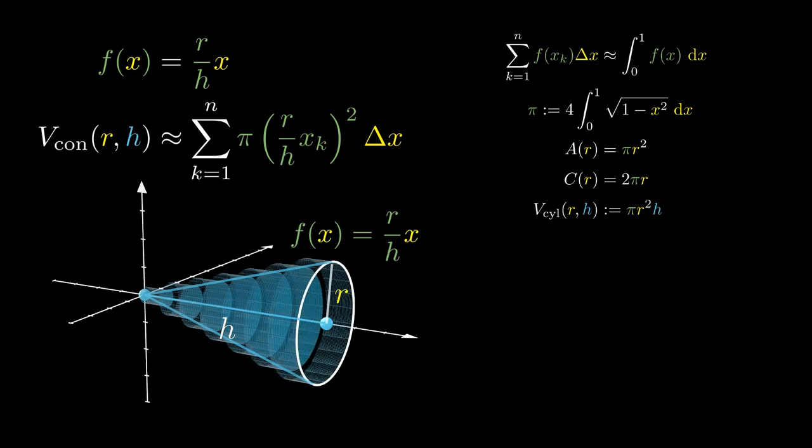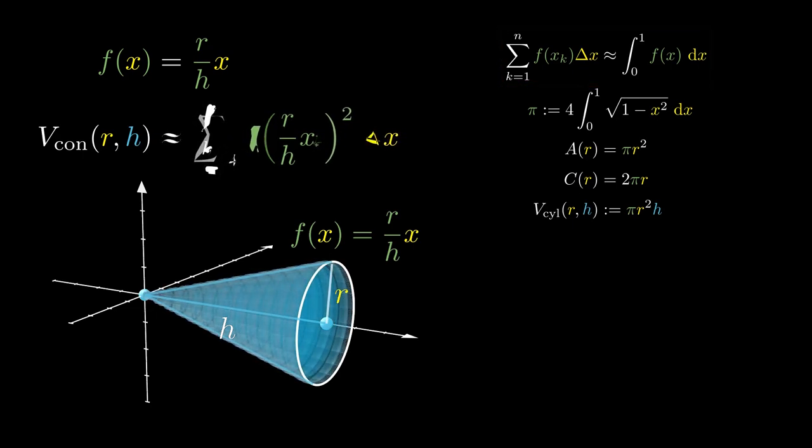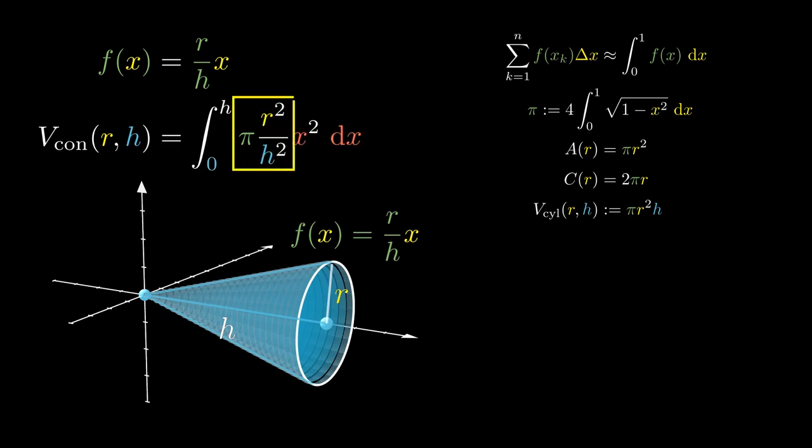As we take more and more cylinders, we approach the actual volume given by the integral. We can simplify this integral with a bit of algebra and pull out the constant πr²/h.